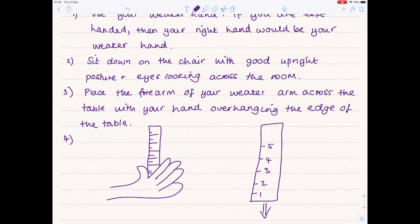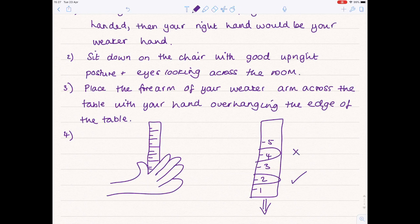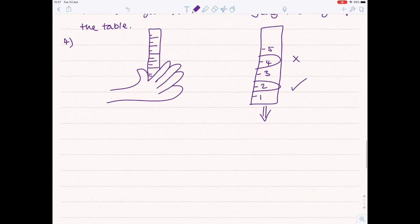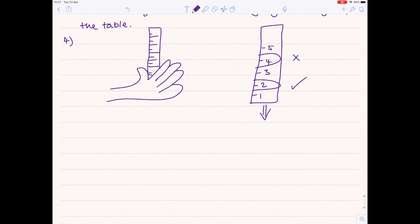So effectively this ruler is going to drop and then you close your fingers around it so your finger might close around here or it could close around here. Obviously it will close closer to the one end so this is a good result. This result would be less good but I'm just going to write out what I said because my drawings are so bad.